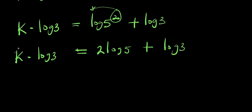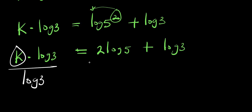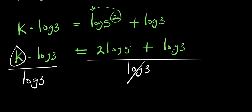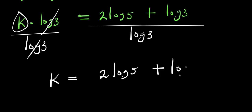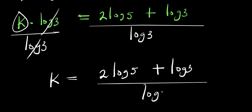So right now I can isolate k by dividing both sides by log 3. The log 3 on the left cancels out, so k equals 2 times log 5 plus log 3, all divided by log 3.